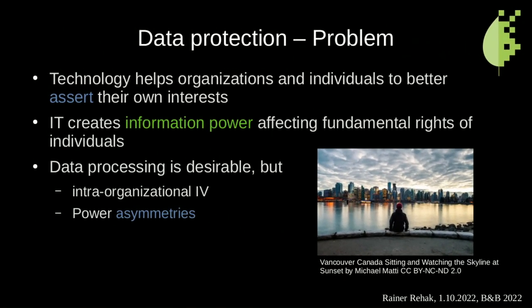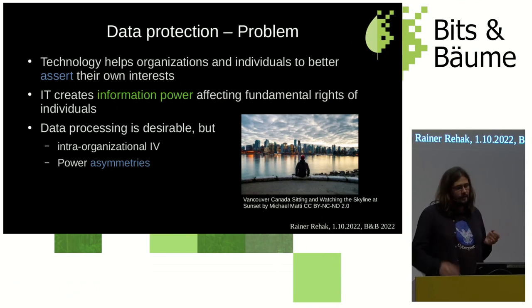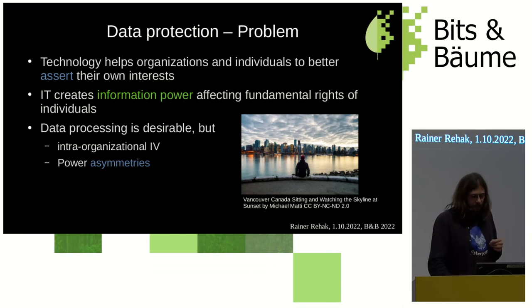To sum up this part: technology, especially IT, helps organizations and individuals to better assert their own interests, and IT creates information power affecting the fundamental rights of individuals because of the big asymmetries between different players. If I program a piece of software, that's not the same thing as when Facebook writes software, given the amount of users and funds involved. We don't want to go back to the caves — we want all the good things that come with digitization — but we have to pay attention to power asymmetries.